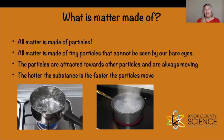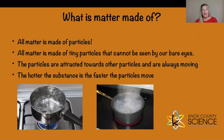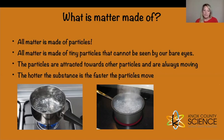What is matter made of exactly? All matter is made of tiny particles that cannot be seen by our bare eyes. You would have to use some sort of scientific instrument to see the particles because they are so small. The particles in matter are attracted towards other particles and are always moving. The hotter the substance is, the faster the particles move.